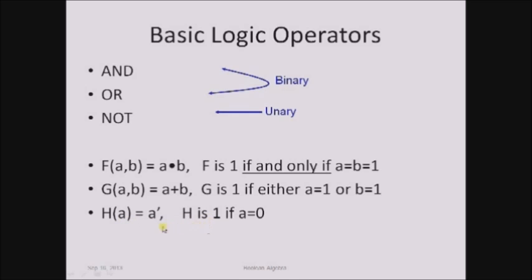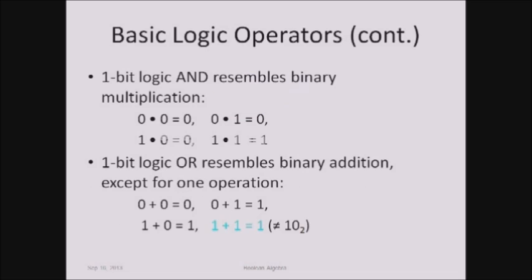The output of the NOT function is zero when the value of a is one. Now let us see the mathematical comparison between these operators. One bit logic AND resembles binary multiplication: 0 AND 0 is 0, 0 AND 1 is 0, 1 AND 0 is 0, and 1 AND 1 is 1 — it exactly reflects binary multiplication.